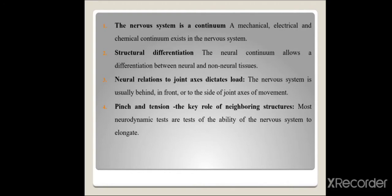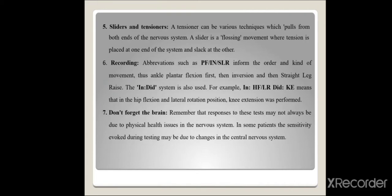The fourth concept is pinch and tension — the key role of neighboring structures. Pinch is compression induced on the nerve causing increased tension within it, and tension is the stretched effect on the nerve also causing increased tension. These are not only dictated by the relationship of the nerve to the joint axis but also by neighboring structures such as muscle contraction, fascia, and tendons.